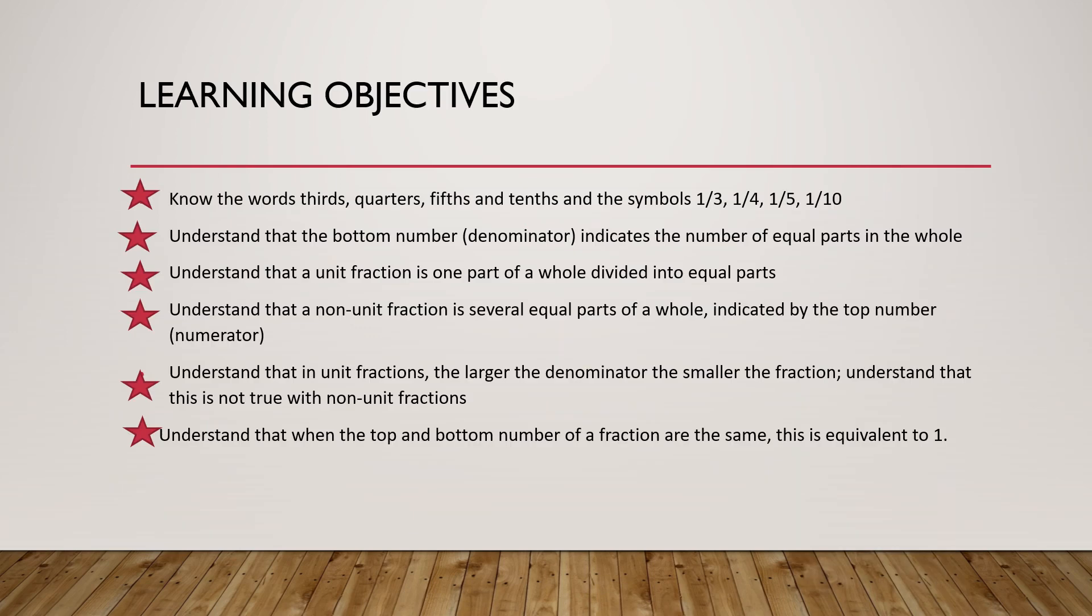So in this video, we looked at the words thirds, quarters, fifths and tenths and their symbols. We looked at the fact that the bottom number, the denominator, is how many equal parts the whole has been broken into. We looked at the fact that a unit fraction has a one on the top. We looked at the fact that a non-unit fraction, like two fifths at the beginning, showed us that it was more than one of those fifths. We looked at how the larger the denominator, the smaller the fraction in unit fractions. And we looked at when both of them were the same, it was equivalent to one.